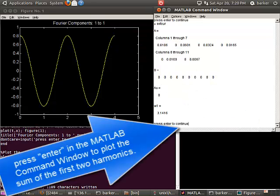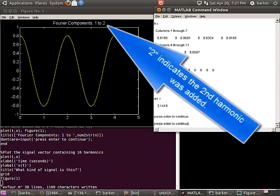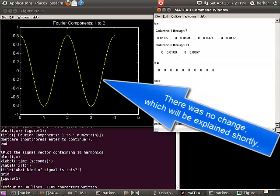Press Enter in the MATLAB command window to plot the sum of the first two harmonics. 2 indicates the second harmonic was added. There was no change, which will be explained shortly.